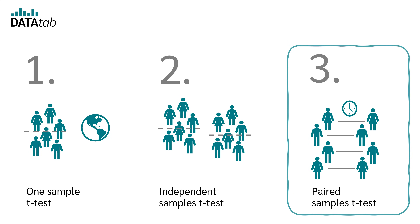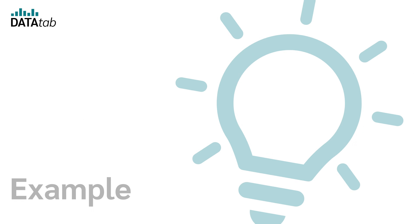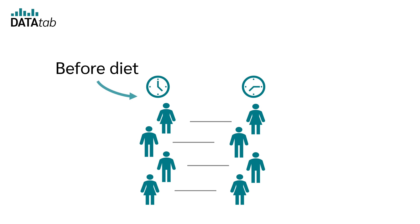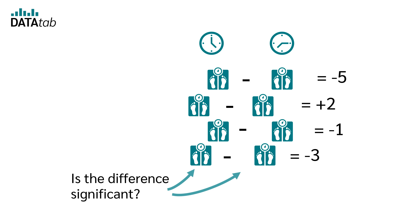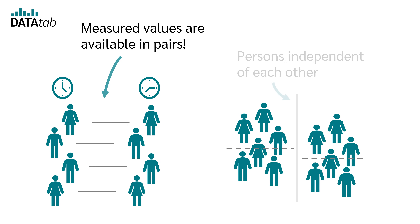When do we use the paired samples t-test? We use it to compare the means of two dependent groups. For example, to know how effective a diet is, we weigh 30 people before the diet and then weigh exactly the same people after the diet. We look at the difference in weight between before and after for each subject and use a paired samples t-test to test whether there is a significant difference. In a paired sample, measurements are available in pairs, resulting from repeated measurements with the same people. Independent samples consist of people and measurements that are independent of each other.